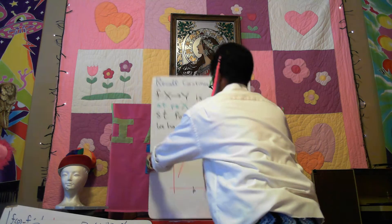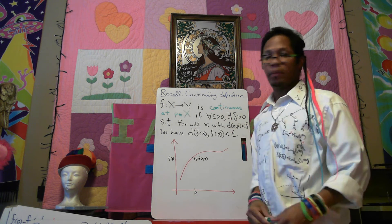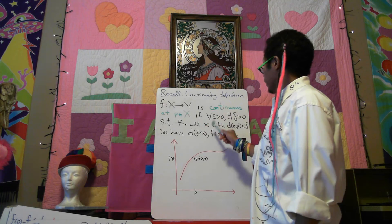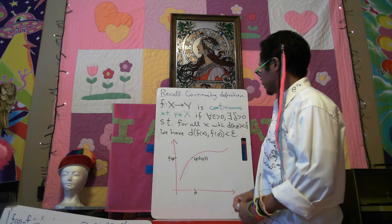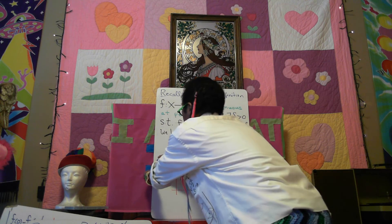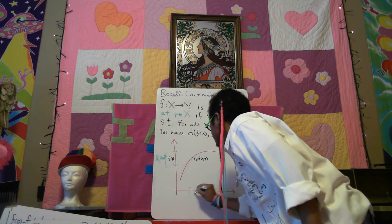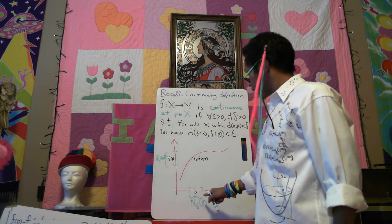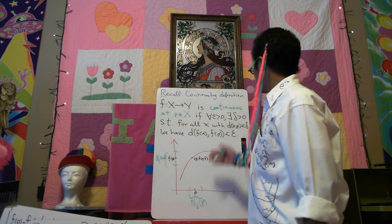Continuity. Recall that a function f from X to Y is continuous at a point p in X, if for every epsilon there exists a delta that depends both on epsilon and our chosen p, such that for all x within delta distance of p, we have that f(x) is within epsilon of f(p). So we can imagine an epsilon neighborhood of f(p), and the goal is to find a delta such that the image of every x inside that delta ball around p is within the epsilon ball of f(p).